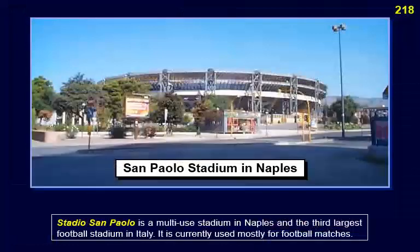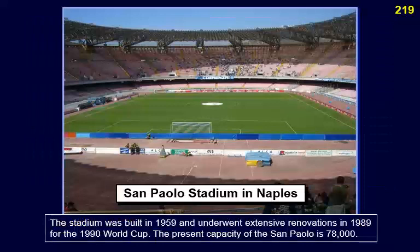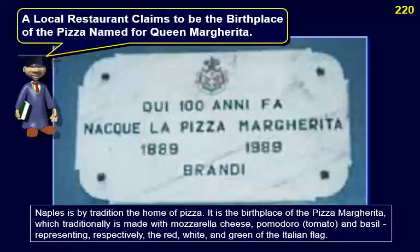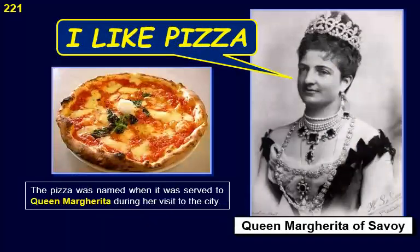Stadio San Paolo is a multi-use stadium in Naples and the third largest football stadium in Italy. The stadium was built in 1959 and underwent extensive renovations in 1989 for the 1990 World Cup. Its present capacity is 78,000. Naples is by tradition the home of pizza — it is the birthplace of the Pizza Margherita, traditionally made with mozzarella cheese, tomato, and basil, representing respectively the red, white, and green of the Italian flag. The pizza was named when it was served to Queen Margherita during her visit to the city.